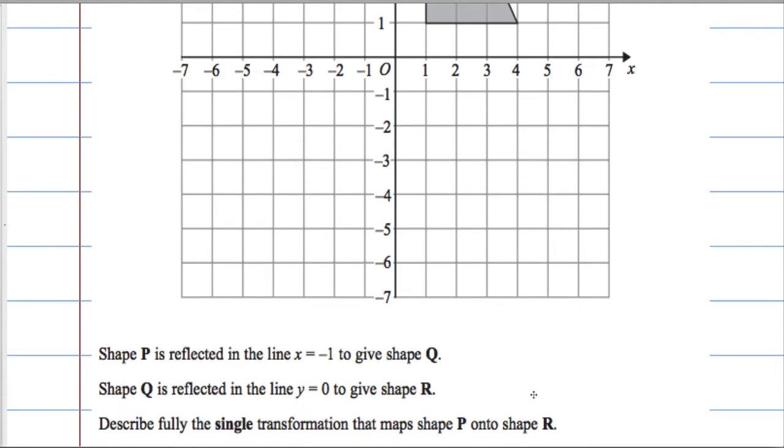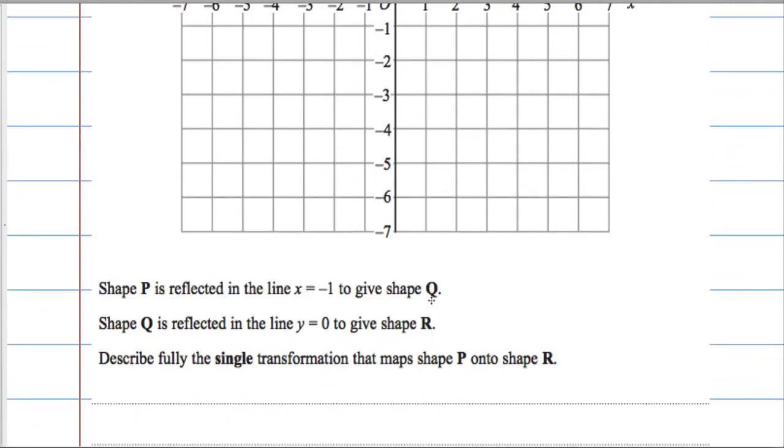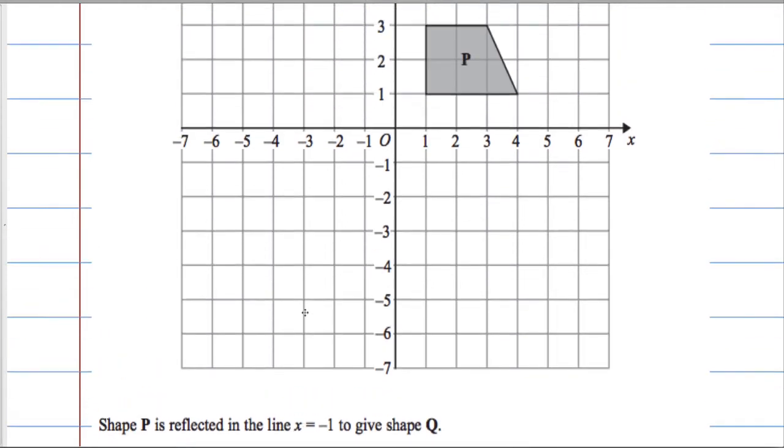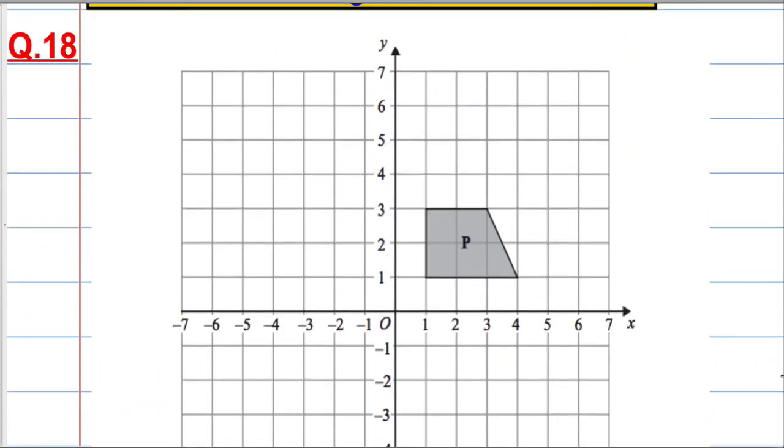In order to work this out, I want to see where shape R ends up. I need to reflect in the line x = -1. Where is the line x = -1? Everywhere on this line, x is -1, so I'm going to reflect in that. I'm just going to count across, that's 1, 2, so it needs to come out 1, 2. That will end up there, that will end up there, and that will end up there.